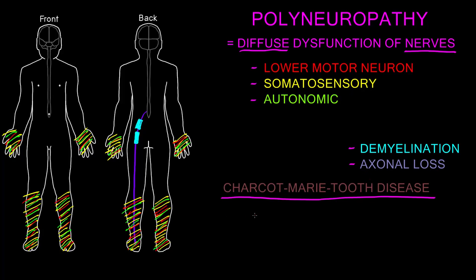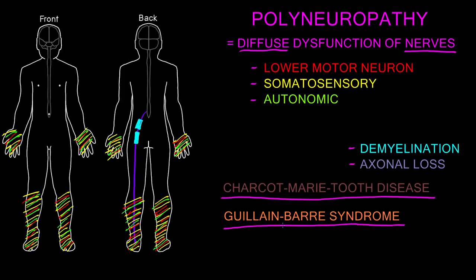An example of an autoimmune polyneuropathy is called Guillain-Barré syndrome, also named after people who gave an early description of it. This is an autoimmune polyneuropathy where cells of the immune system cause fairly rapid abnormalities of nerves, often over a few days or a few weeks. Usually this is a demyelinating disorder where immune system cells are attacking the myelin on nerves in the peripheral nervous system. However, neither of these nor the many other causes of polyneuropathy are the most common.